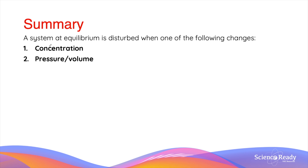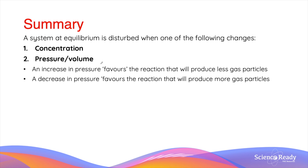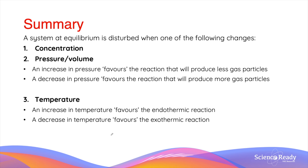To summarise: a system at equilibrium is disturbed by changes in concentration, pressure/volume, or temperature. For pressure and volume: an increase in pressure favours the reaction producing fewer gas particles, while a decrease in pressure favours the reaction producing more gas particles. For temperature: an increase in temperature favours the endothermic reaction, making it faster than the exothermic reaction; a decrease in temperature favours the exothermic reaction, making it faster than the endothermic reaction.